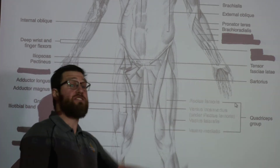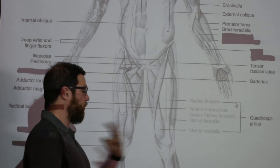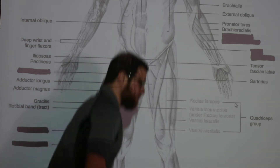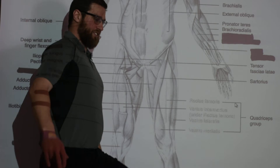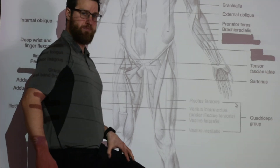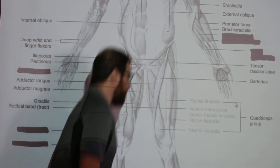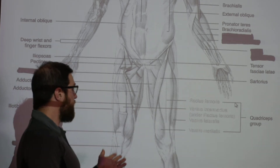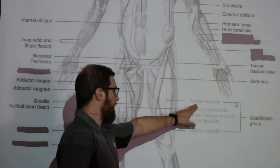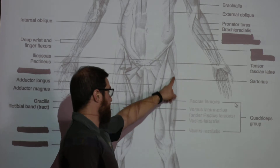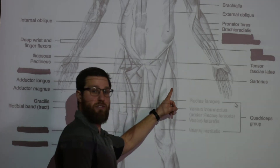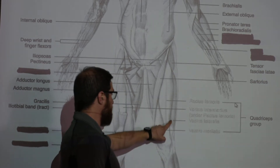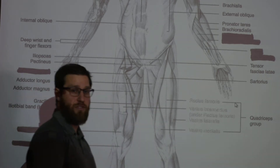Next is the famous quadriceps group — four muscles that combine to extend the knee. When you extend at the knee, that is your quadriceps. The one to remember as a standalone is your rectus femoris, which is the most superficial of the four. If you extend your leg and feel the muscle, you'll feel your rectus femoris most prominently.